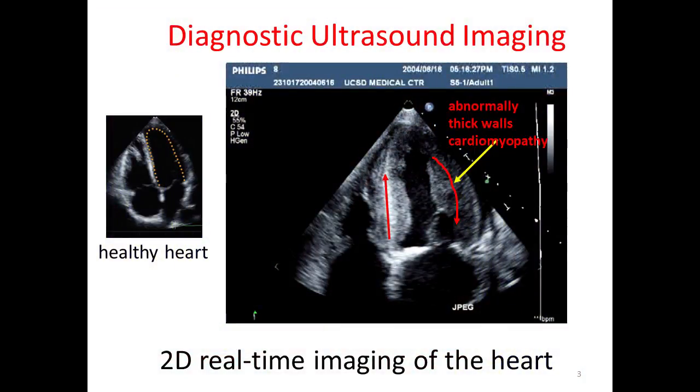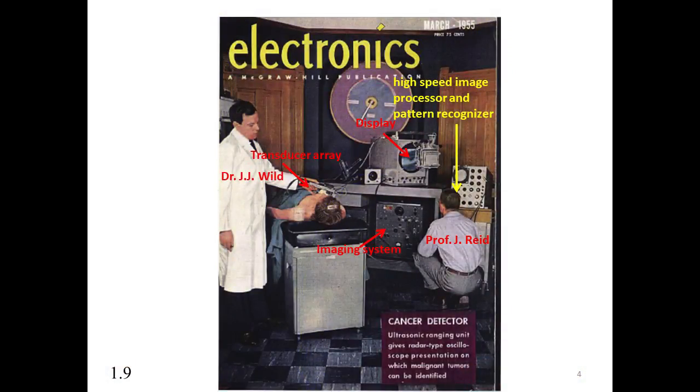First of all, most of you are acquainted with two-dimensional diagnostic ultrasound. Here we have a picture of the heart. This is a healthy heart here on the left, and this one on the right has cardiomyopathy. A person trained to read these images would look at abnormalities in the structure of the heart, its movement and its texture. And of course, it's real-time imaging.